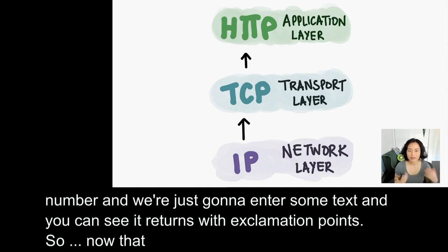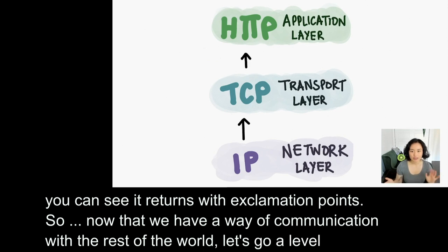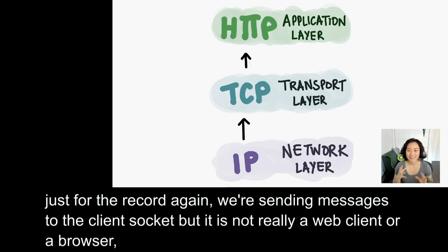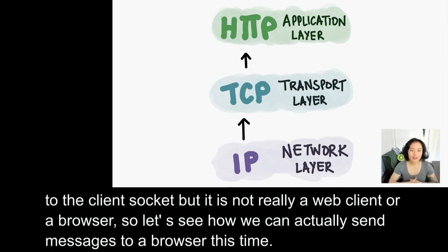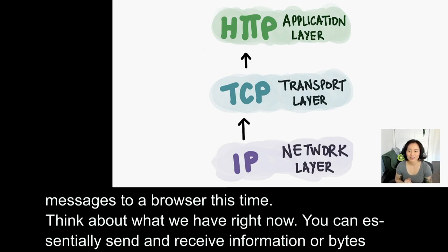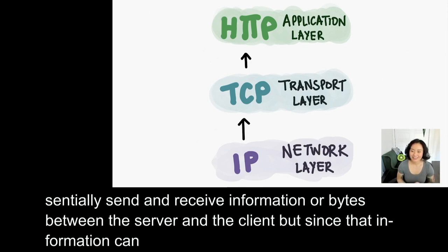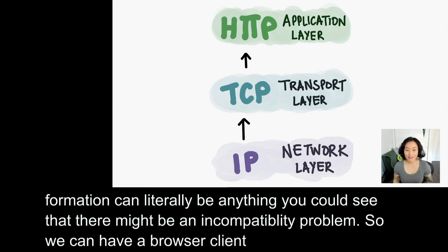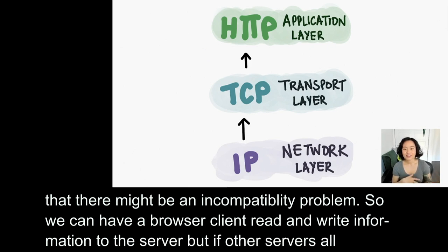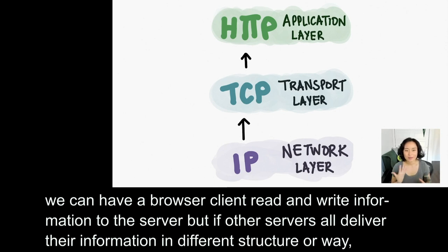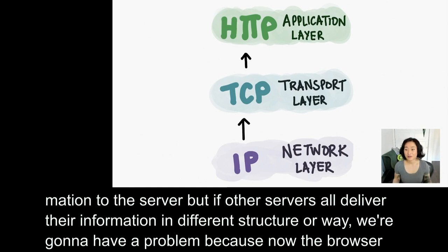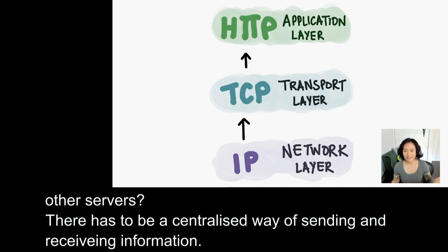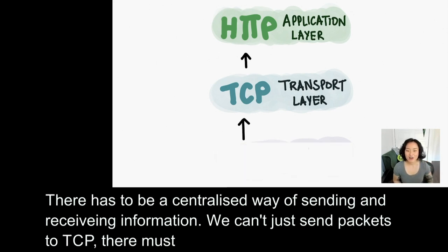Now that we have a way of communicating with the rest of the world, let's go a level higher. We're sending messages to the client socket, but it's not really a web client or a browser. You can essentially send and receive streams of information or bytes between the server and the client, but since that information can literally be anything, there might be an incompatibility problem. If servers all deliver their information in a different structure or way, the browser wouldn't know how to communicate with all those other servers. There has to be a standardized way of sending and receiving information — we can't just stream the packets through TCP. There must be a way to structure that information, and that's where HTTP was born.